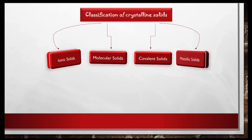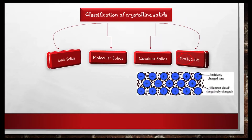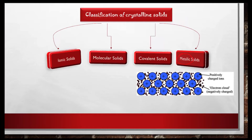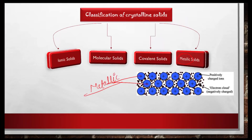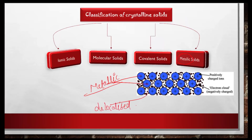Examples of covalent solids include diamond, where carbon is bonded to carbon with covalent force, and silica (SiO2), where silicon and oxygen have covalent forces between them in a network structure with a regular long range order. Then the last category is metallic solids, which consist of metal ions and delocalized electrons. At the microscopic level, positive metal ions are surrounded by freely moving delocalized or free electrons.